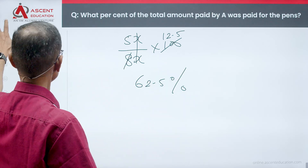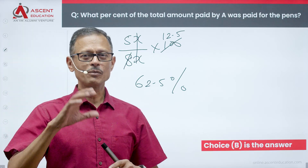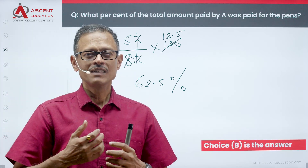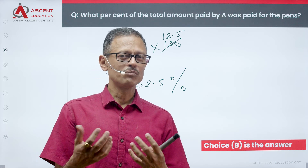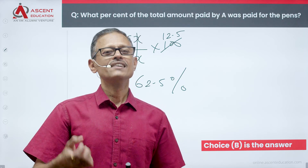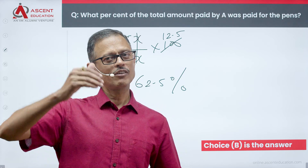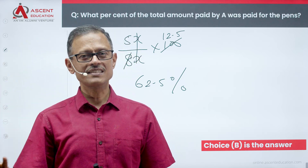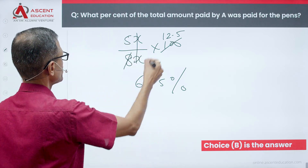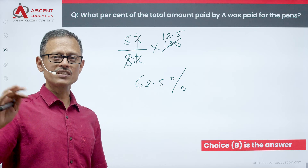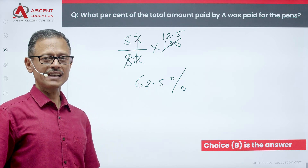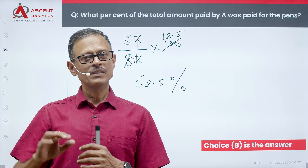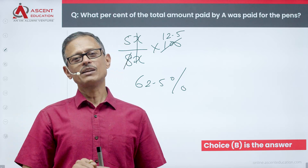62.5% is the answer, which is choice B. By equating 7y + 4z = 3x, we reduced three variables to a single variable and solved cleanly. This is what we call bringing it all down to one equation with one variable.